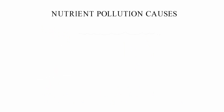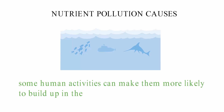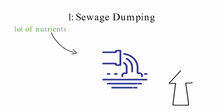Nitrogen and phosphorus can be found in water bodies naturally. However, some human activities can make them more likely to build up in the world's oceans, lakes, and rivers. Sewage dumping: Wastewater from homes and businesses has a lot of phosphorus and nitrogen in it. A lot of nutrients can get into water bodies when sewage that hasn't been properly cleaned is flushed into them. Sewage water can increase the amount of nitrogen in water, and harmful algal blooms happen when sewage water keeps being dumped in the same place.